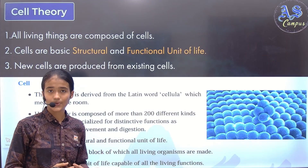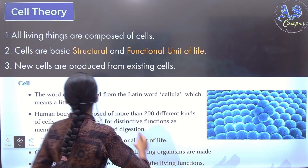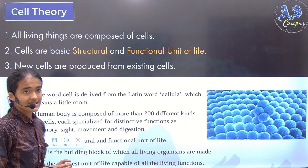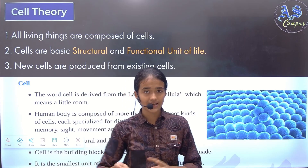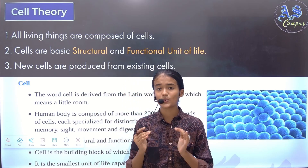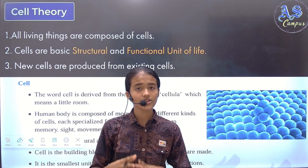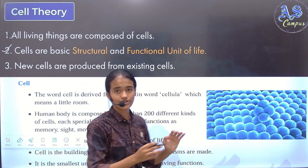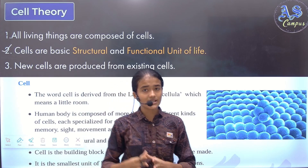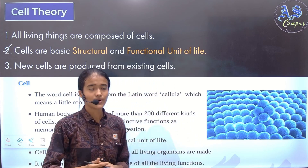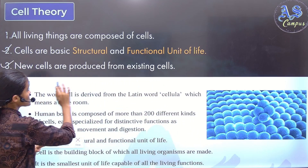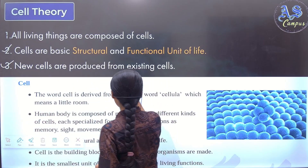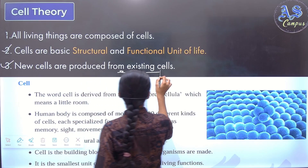There are some cell theories. First, all living things are composed of cells, meaning cells are the building blocks of any organism's body. Next, cells are the basic structural and functional unit of life, as we discussed in the previous slides. The last one is that new cells are produced from existing cells, as new cells are made by old cells.